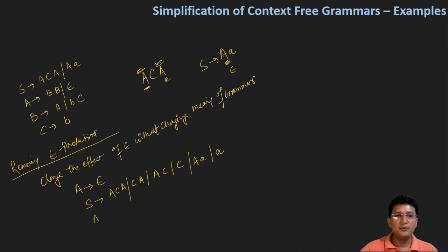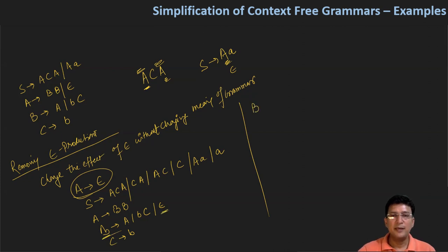After this, A produces BB. So we haven't removed the epsilon term yet. Then we have B produces A and B produces BC. If we remove A by substituting epsilon from the right hand side, A produces epsilon, then epsilon will come here and C produces B we already have. So in step 1 we did this much work. In step 1 we removed A produces epsilon. Now we see that we got another epsilon production, B produces epsilon.